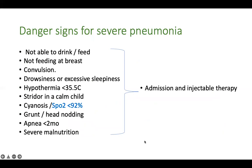The danger signs of severe pneumonia include: inability to drink or feed, convulsions, not roused when addressed, drowsiness or excessive sleepiness, hypothermia, stridor in a calm child, cyanosis, grunting, head nodding, apnea in a baby less than two months, and pneumonia in a child with severe malnutrition. A newer addition is oxygen saturation less than 92% is also taken as severe pneumonia. Note that inability to drink is considered more severe than inability to feed, but both are danger signs.